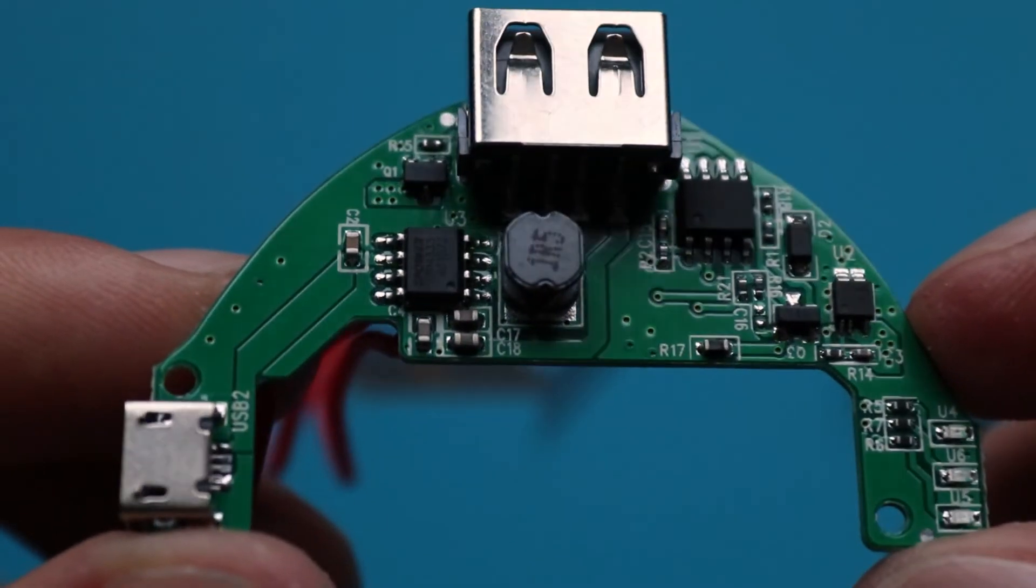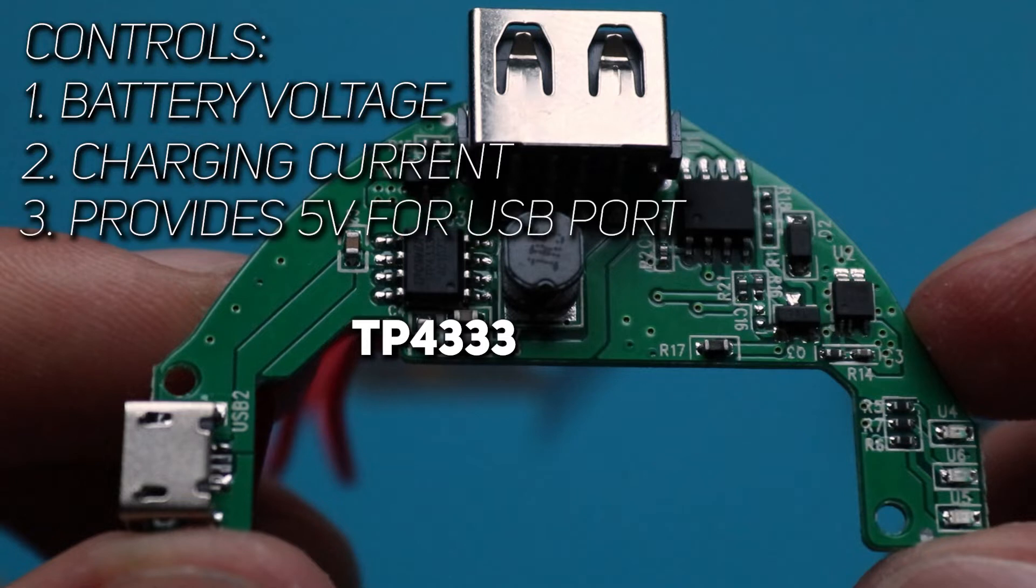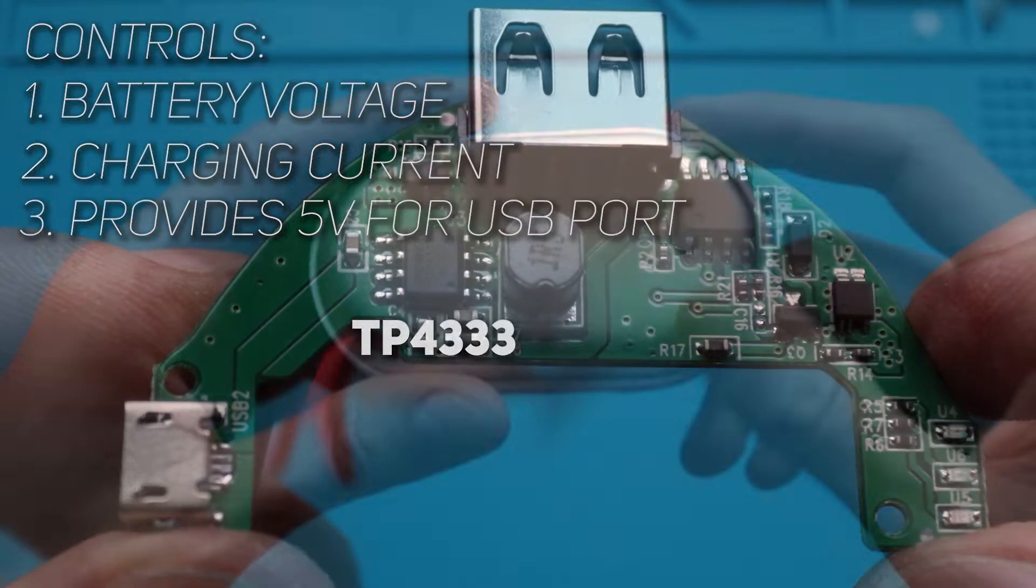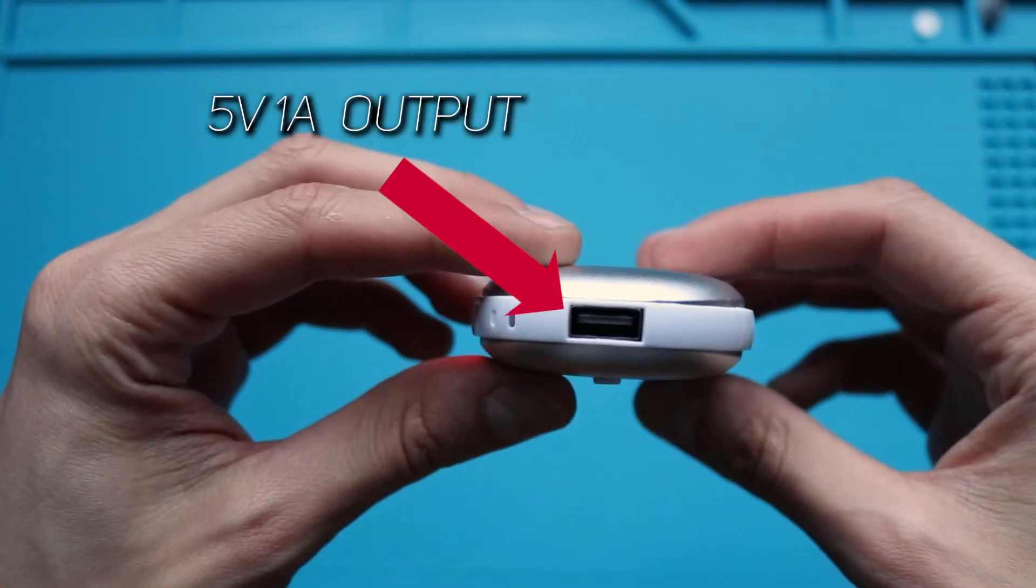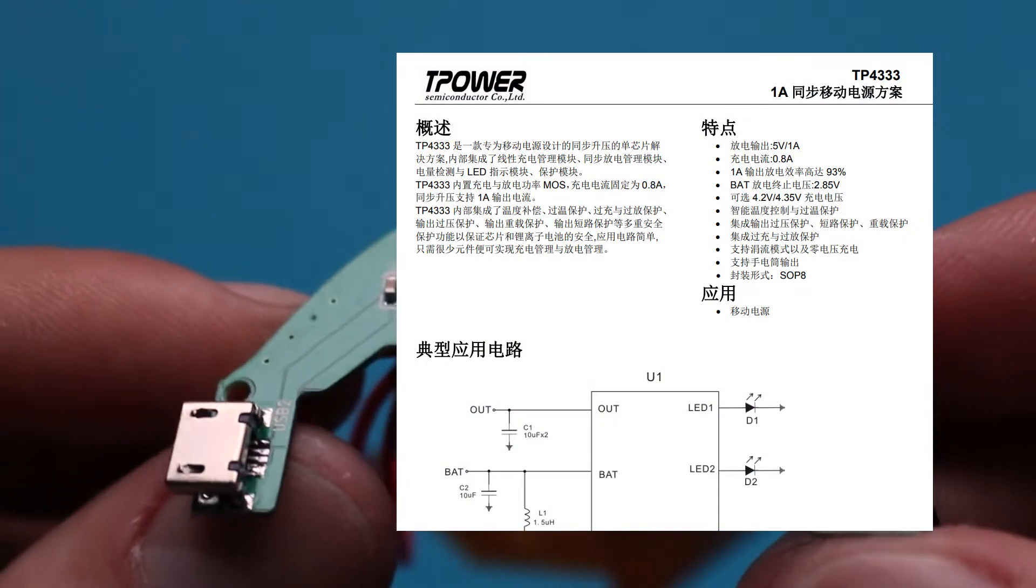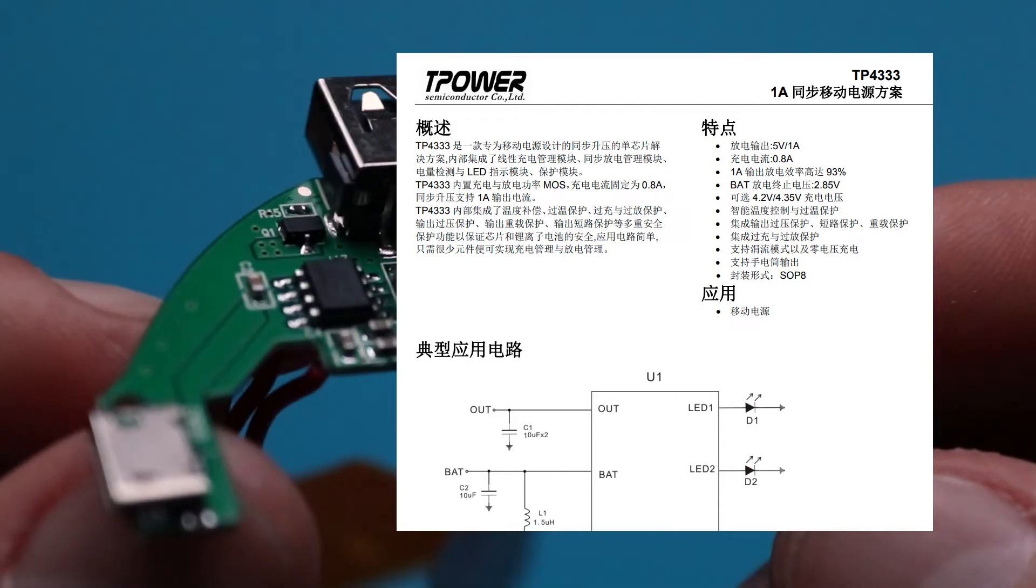Another integrated circuit is managing battery, controlling its voltage, charging current and also provide 5V output, when this device works as a power bank. Oh yeah, by the way, this mini hand warmer also can work as a power bank, providing 5V and 1A through USB output. The IC that is responsible for that is TP4333, and the datasheet is in Chinese, of course.